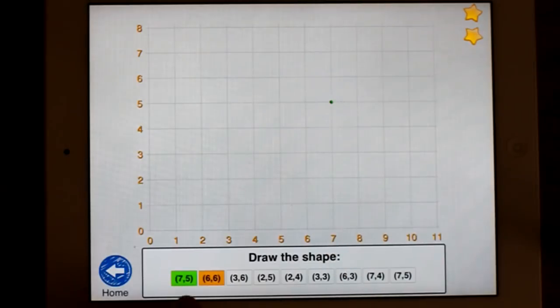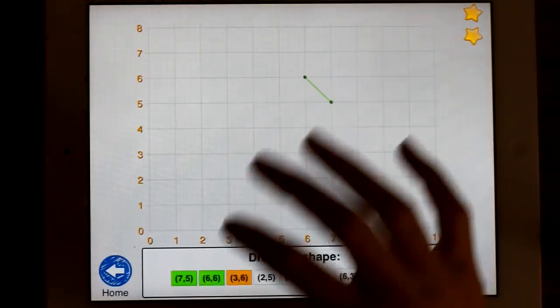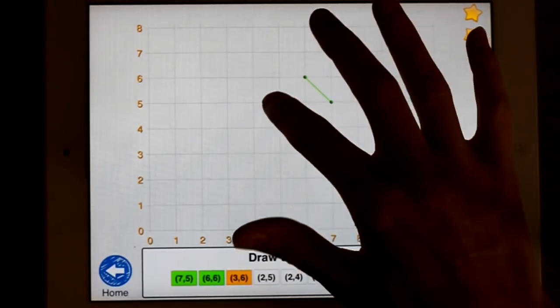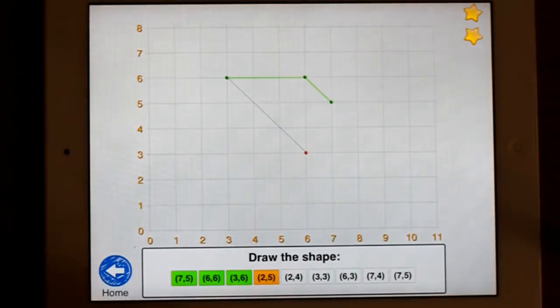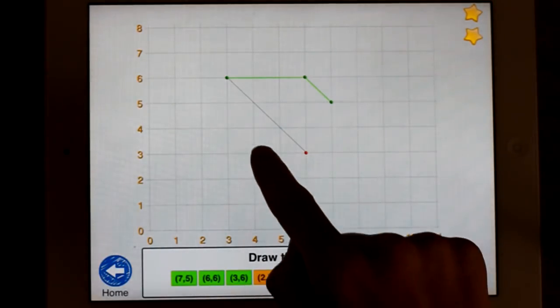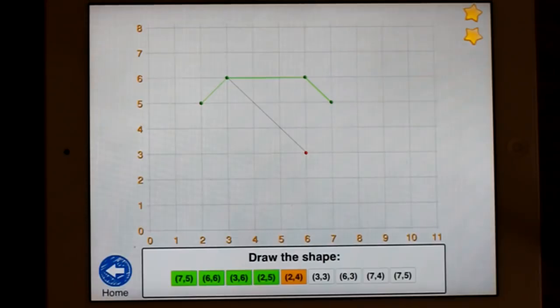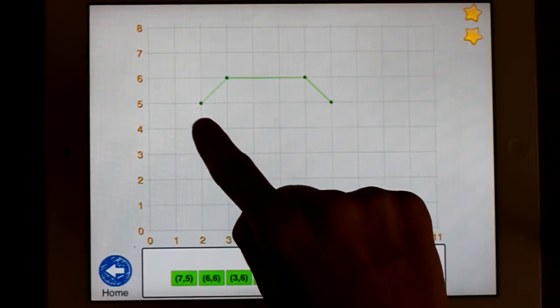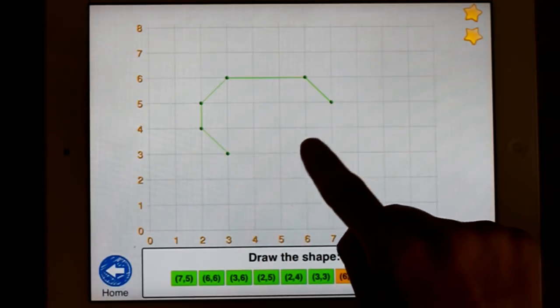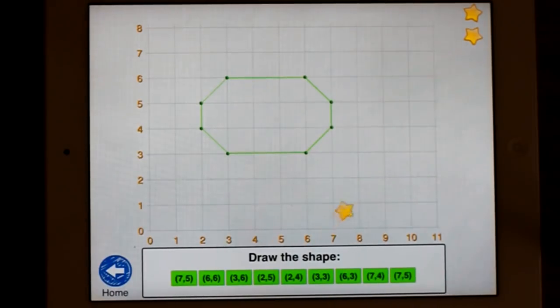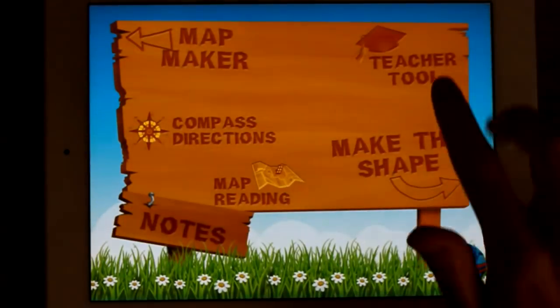So I'll do the first one first. 7,5. Got it correct. 6,6. So that's wrong obviously. 6,6. 3,6. Wrong. Goes red. So you can't move on until you've actually got it right. 2,4. I'm guessing now. There you go. Some of your students might be able to do that too.